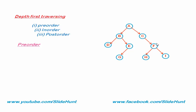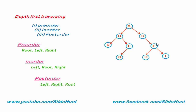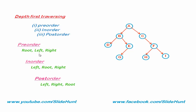For pre-order traversal, first we visit the root, then the left subtree, and then the right subtree. In case of in-order, first we visit the left subtree, then the root, and then the right subtree. For post-order traversal, first we visit the left subtree, then the right subtree, and then the root. The left subtree is always traversed before the right subtree. The difference among the algorithms is the time at which the root is processed. In pre-order, the root is processed before the left and right subtree. In in-order, the root is processed in between the left and right subtree. And in post-order, the root is processed after the subtrees are traversed.